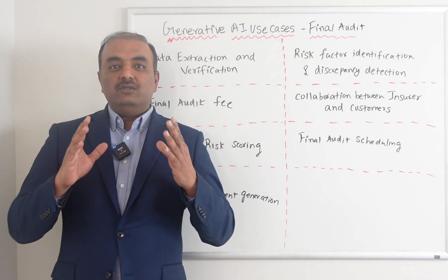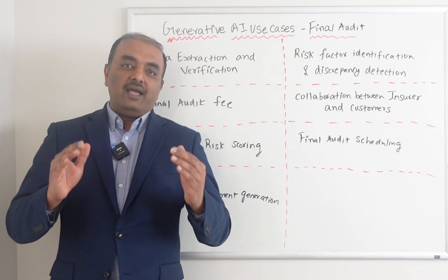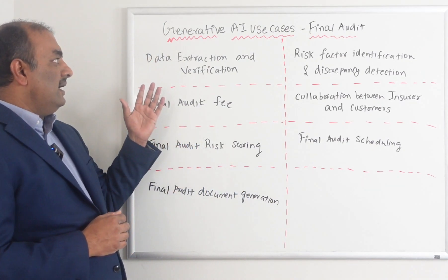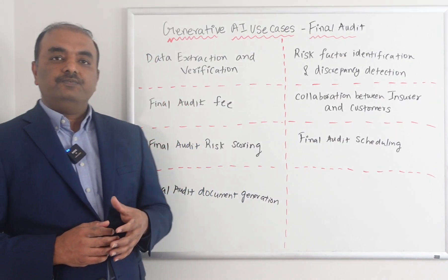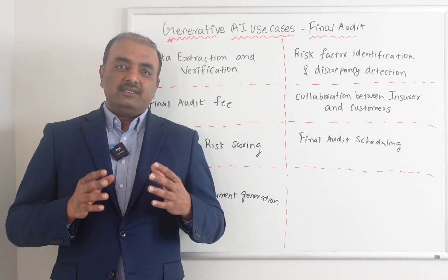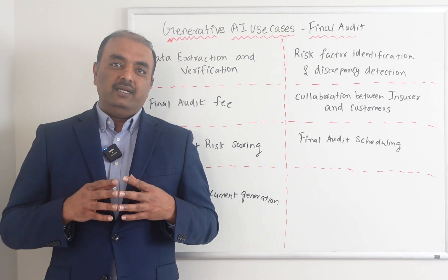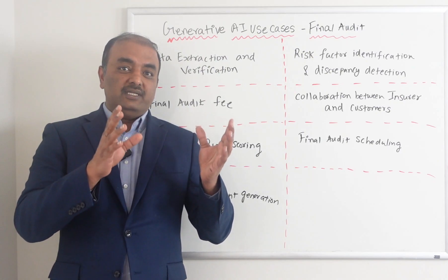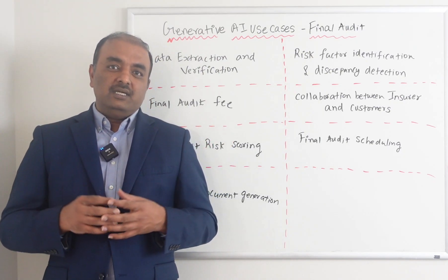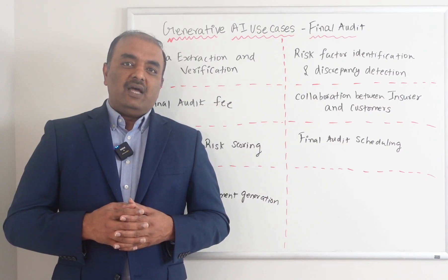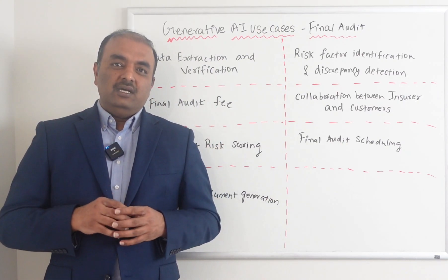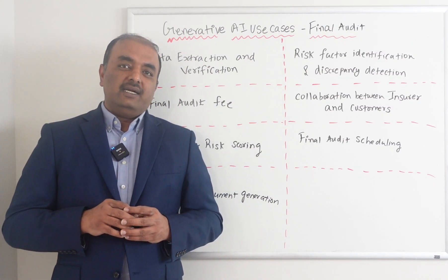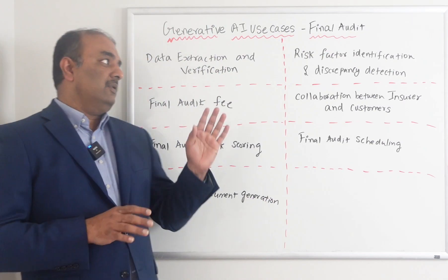Now let's look at some use cases where Generative AI can help to ease this entire process. Starting with data extraction and verification: without AI, auditors have to go to the field, know the actual payroll, and verify it by going to ADP providers or other payroll providers. With AI having access to different sources, it can automatically pull the actual payroll for those employers and enter the data automatically without somebody keying it in.